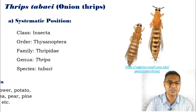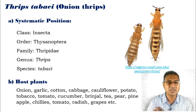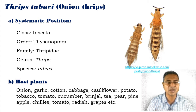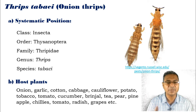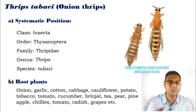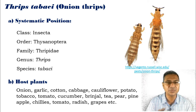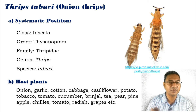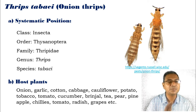The host plants include onion, garlic, cotton, cabbage, cauliflower, and potato. These are a number of vegetable and fruit plants available in agriculture fields where they attack. It is polyphagous in nature.